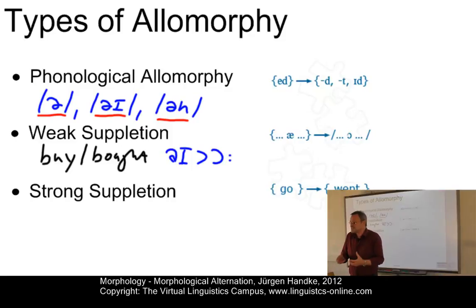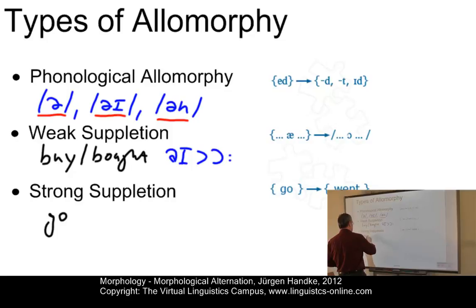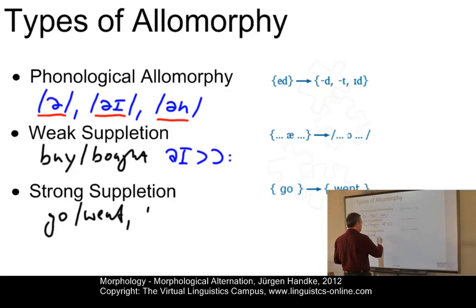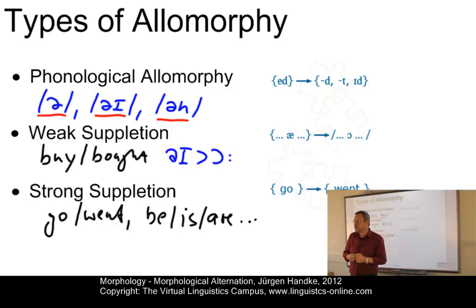Even less similar are the allomorphs of a particular morpheme if we have the case of strong suppletive allomorphy. Here examples would be 'go' and 'went', or cases like 'be', 'is', 'are', and so on. Here we have morphs belonging to the same paradigm, but they do not exhibit any similarity at all. You call this type of allomorphy strong suppletive allomorphy.